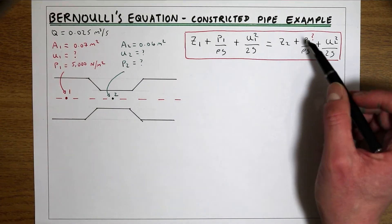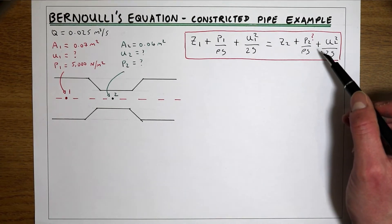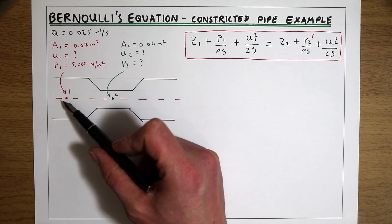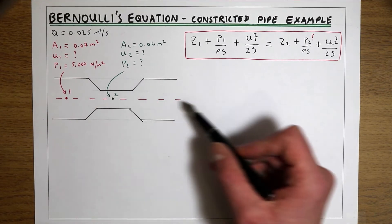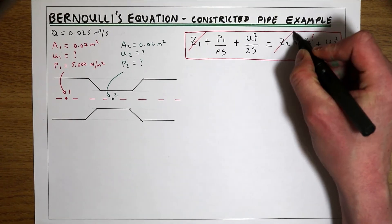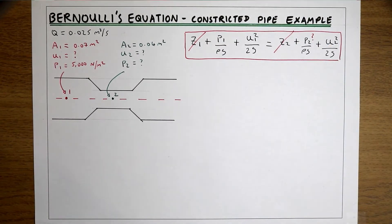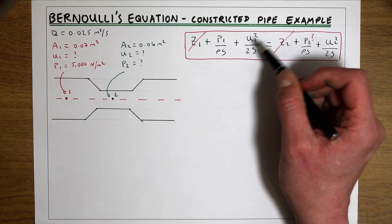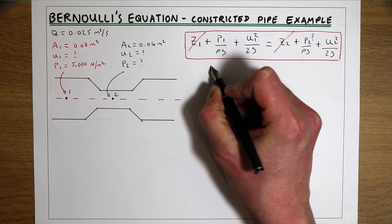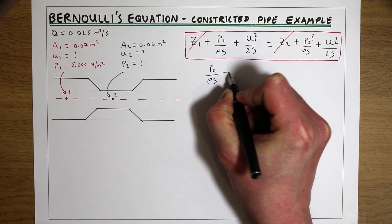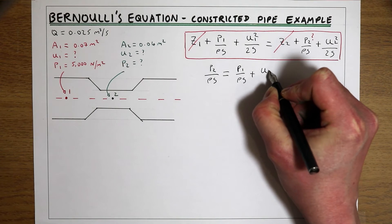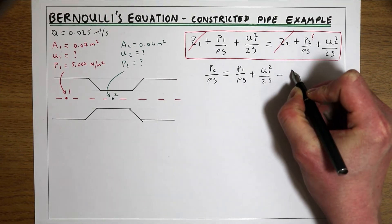The problem is that apart from P2 we've got five other unknowns in this equation, so we need to reduce that down so P2 is our only unknown. Looking at the pipe, the elevation is the same all the way through, so Z1 equals Z2, which means we can cancel those terms out. We can say that the pressure head at 1 plus the velocity head at 1 equals the pressure head at 2 plus the velocity head at 2. Rearranging for P2: the pressure head at 2 equals the pressure head at 1 plus the velocity head at 1 minus the velocity head at 2.